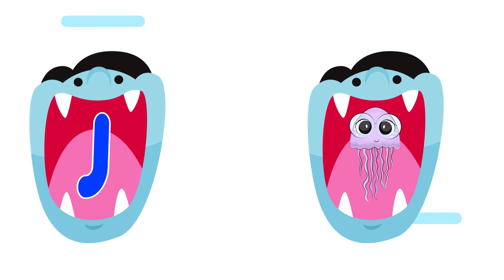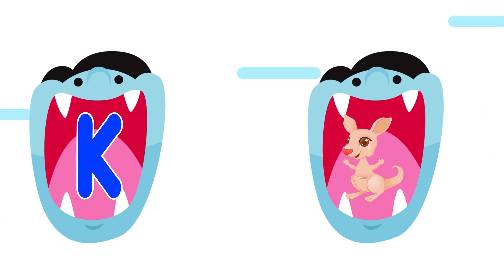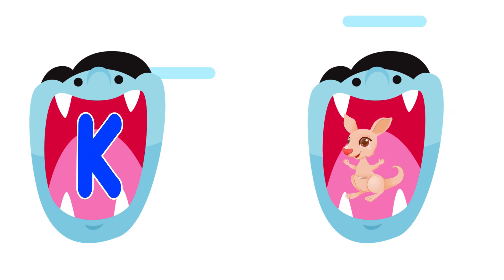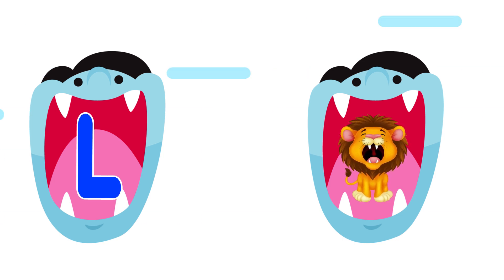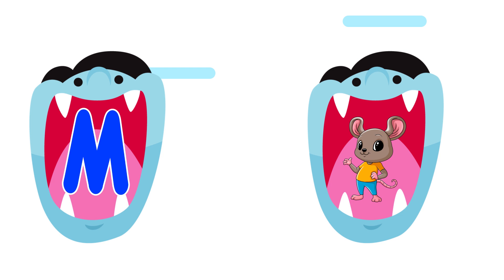J is for jellyfish. Jellyfish, jellyfish, jellyfish. K is for kangaroo. Kangaroo, kangaroo, kangaroo, kangaroo. L is for lion. Lion, lion, lion.